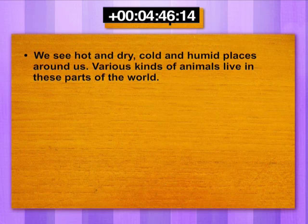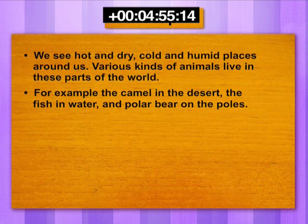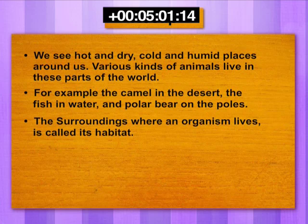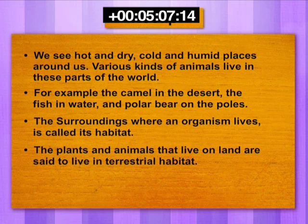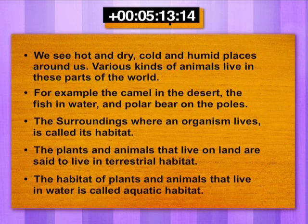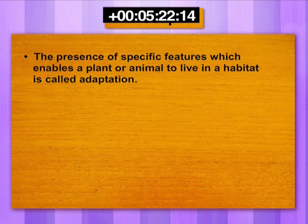Let's recall what we have learnt. We see hot and dry, cold and humid places around us. Various kinds of animals live in these parts of the world — for example, the camel in the desert, the fish in water, and the polar bear on the poles. The surroundings where an organism lives is called its habitat. The plants and animals that live on land are said to live in terrestrial habitat, and the habitat of plants and animals that live in water is called aquatic habitat. The presence of specific features which enables a plant or animal to live in a habitat is called adaptation.